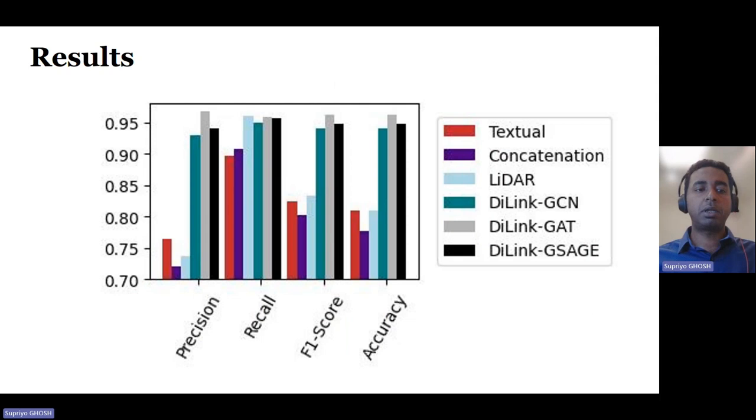We evaluate the performance of our model on one year of production incident link data from Microsoft and demonstrated that our DI-link method with graph attention network improves the overall accuracy and F1 score by at least 14% over existing benchmarks such as a simple concatenation or a convex combination of text and graph embeddings.